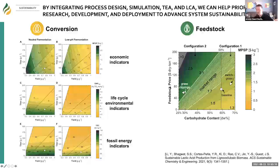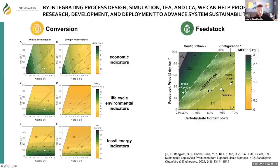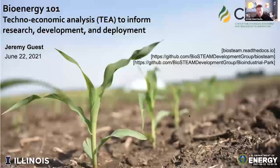We also try to connect back to feedstocks. If there are key assumptions about how much carbohydrate we're getting out of the feedstock we're purchasing, we can look at the implications for MPSP and what we're willing to pay for the feedstock. In all cases, we're just trying to close the loop and inform developments in conversion and in feedstocks. Thanks very much.